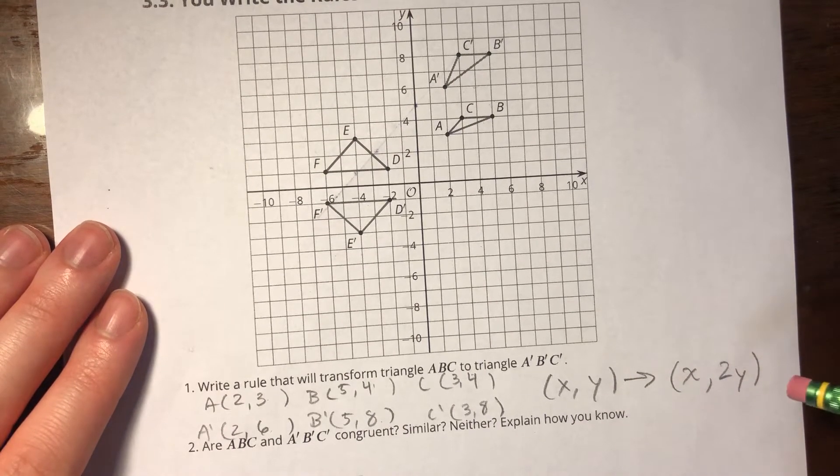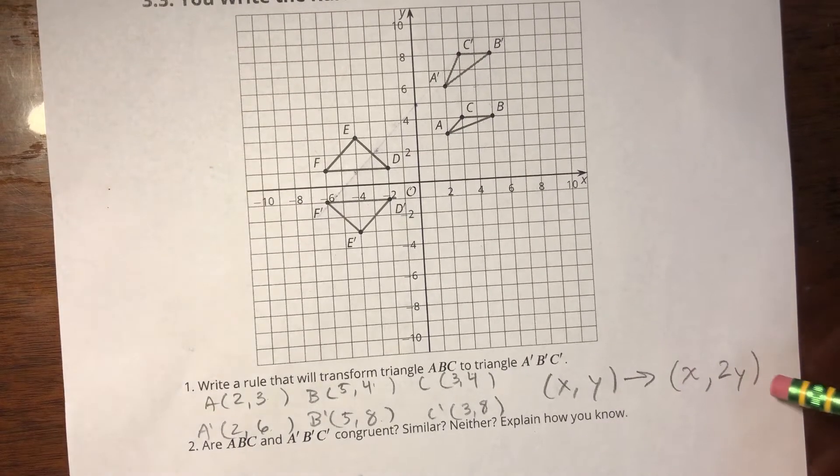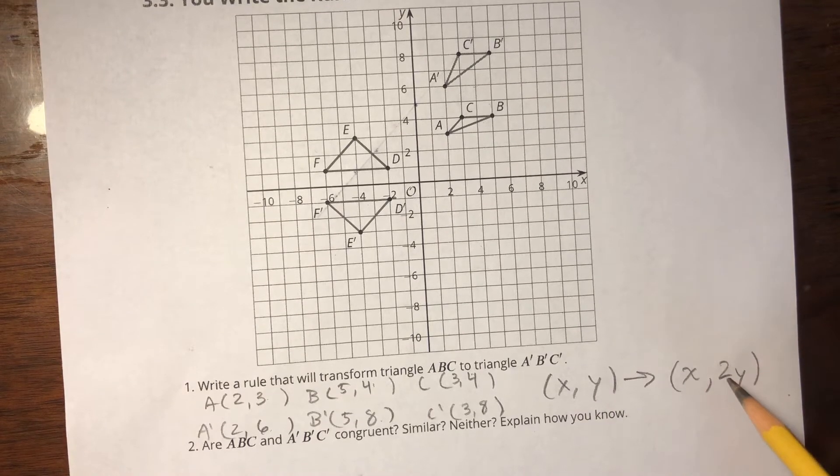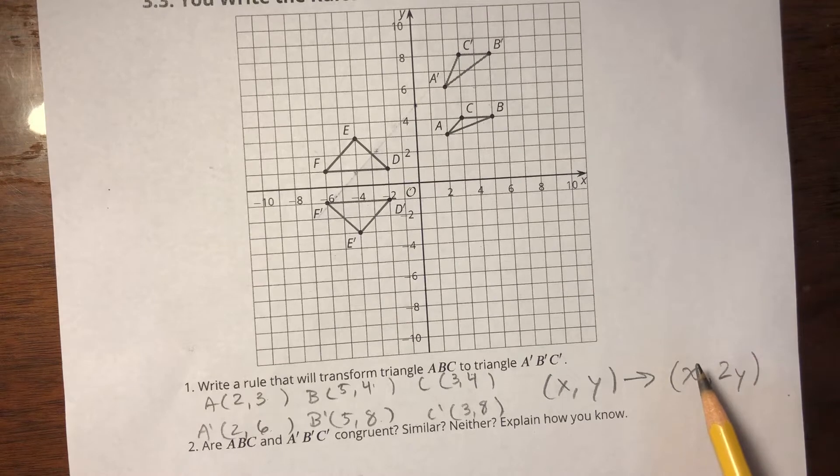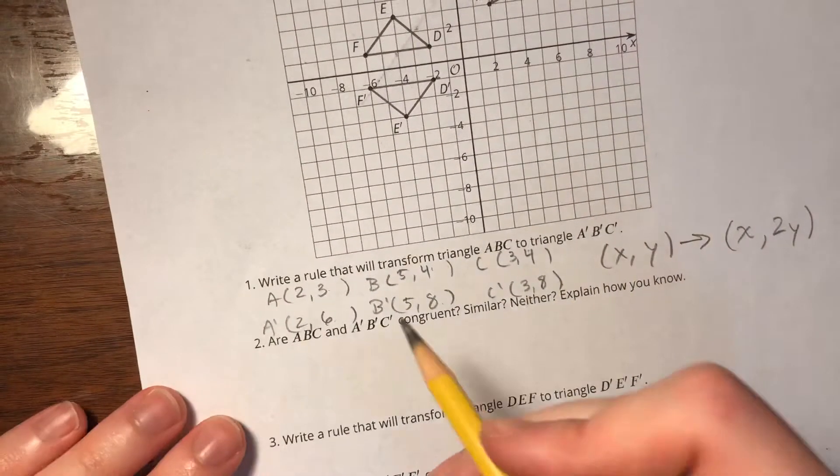So right off the bat, I can see that there is no rule that works for this. We don't have a rule that only multiplies the y coordinate by 2. If the x was also multiplied by 2, then I would know that it was a dilation scale factor 2 centered at the origin. So I'm going to say neither.